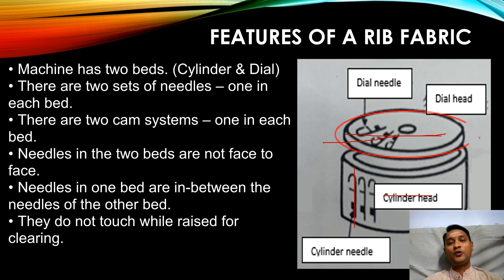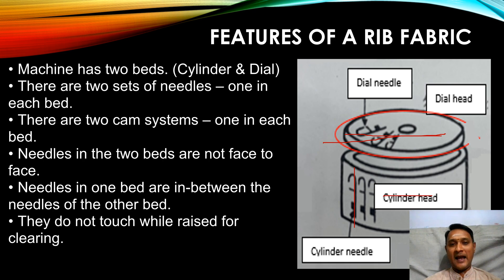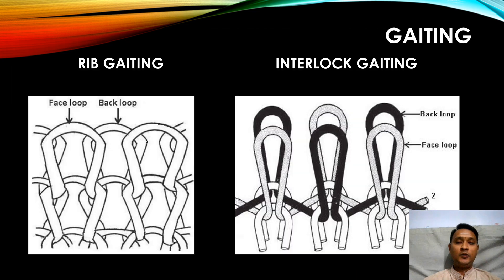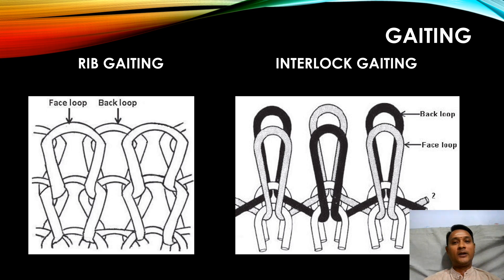Since there are two sets of needles, there will be two sets of cams required to activate the needles. We also need to understand one more terminology called gating. There are two types of gating: one is rib gating, and another one is interlock gating.